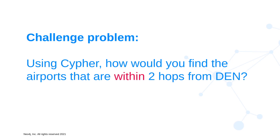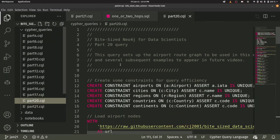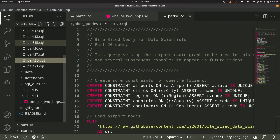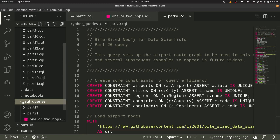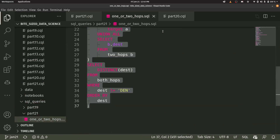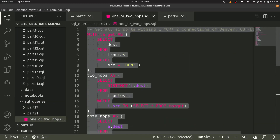You'll notice the word 'within' is in a different color, because some people commented back saying your query gets things that are exactly two hops, but what about the airports that are one hop? So I created a new query for that. If you go into the SQL queries subdirectory and then part 21, look at the 'one or two hops dot SQL' file.